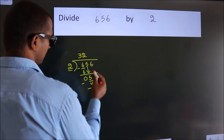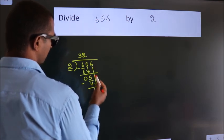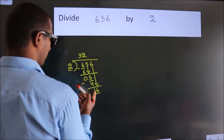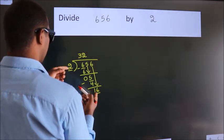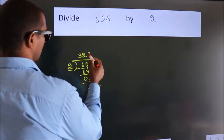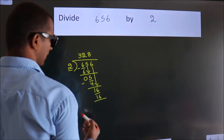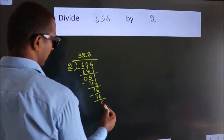After this, bring down the beside number. So 6 down, so 16. When do we get 16 in the 2 table? 2 eighths, 16. Now we subtract. We get 0.